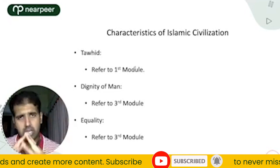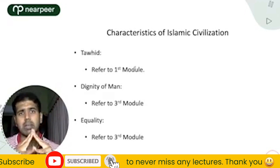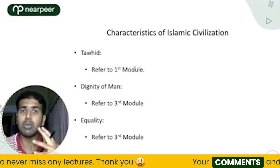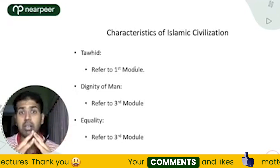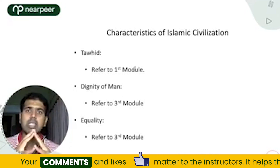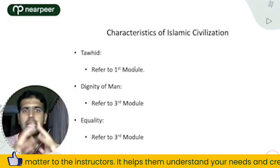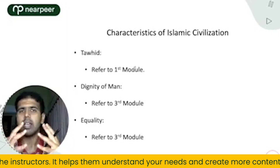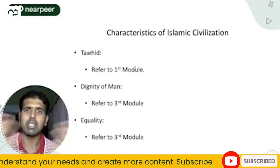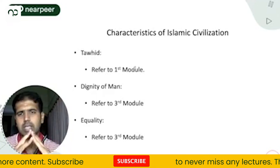We have seen very detailed discussions in the last module about rights — the right to difference, right to life, property and privacy. We have also addressed the misconception that Arab and Muslim are the same thing. Islam is not limited to one people. Islam upholds equality and dignity of man.